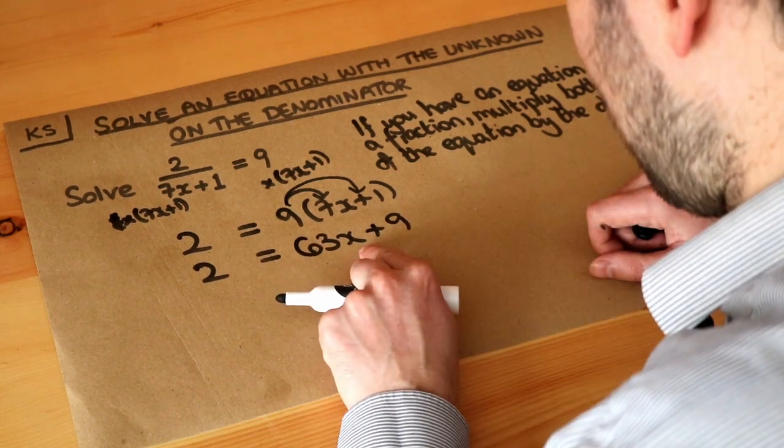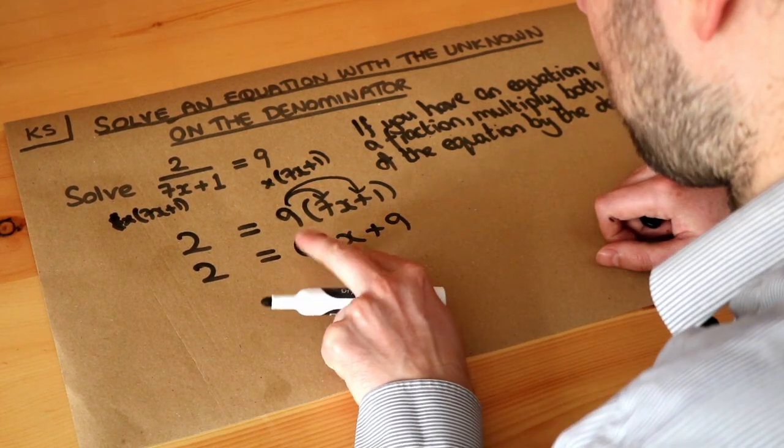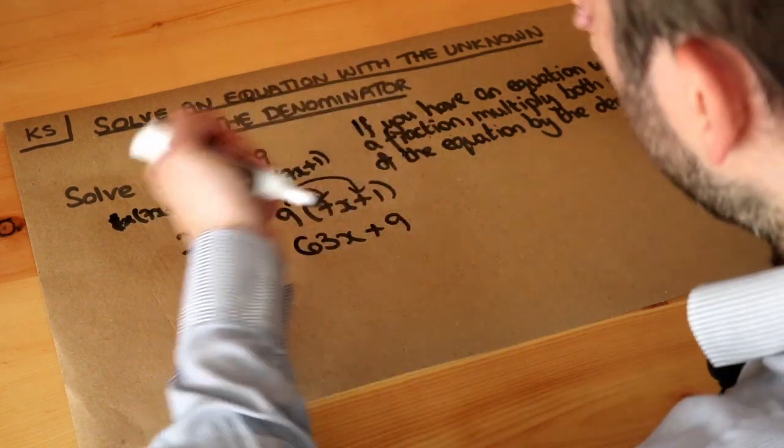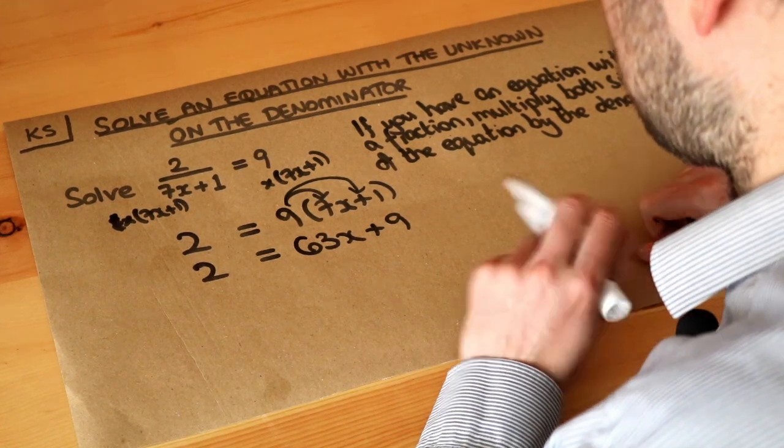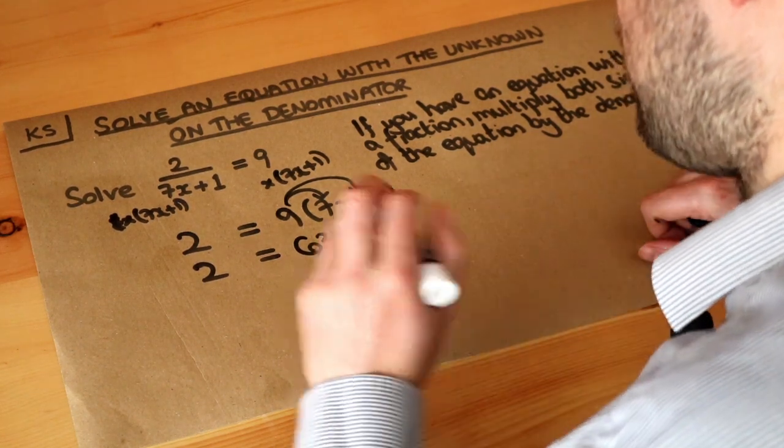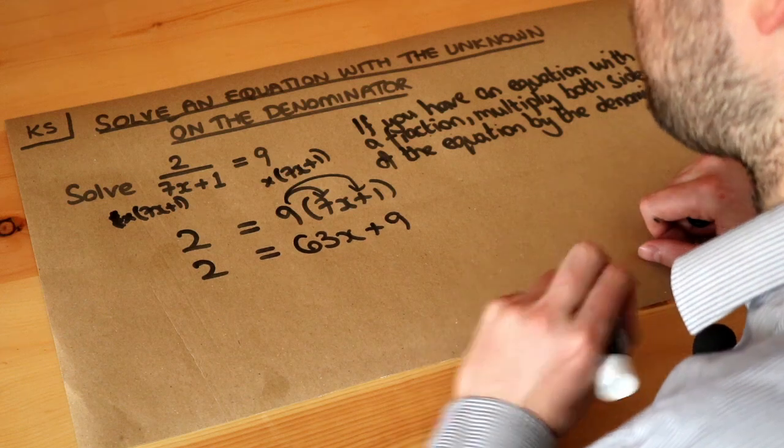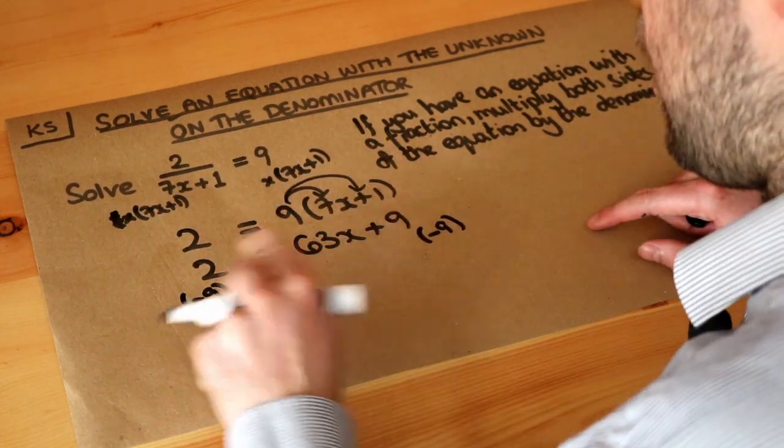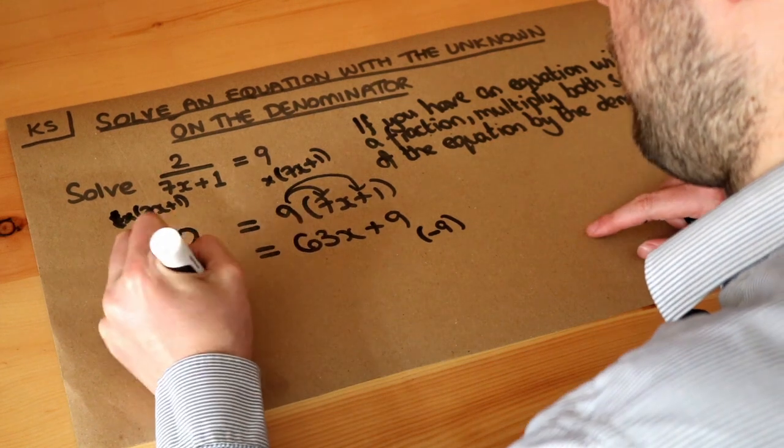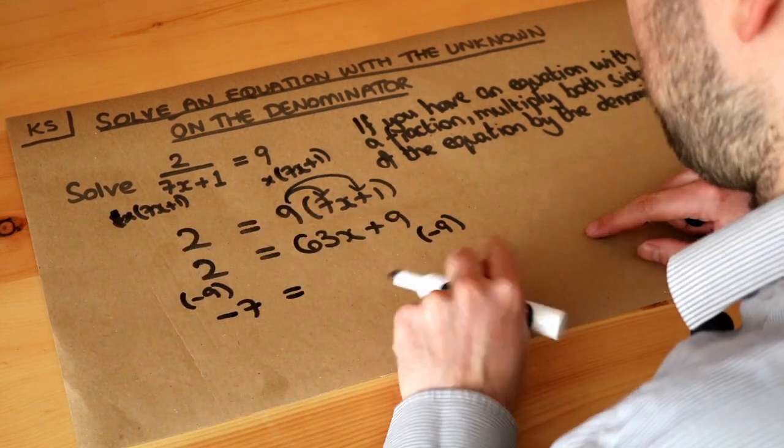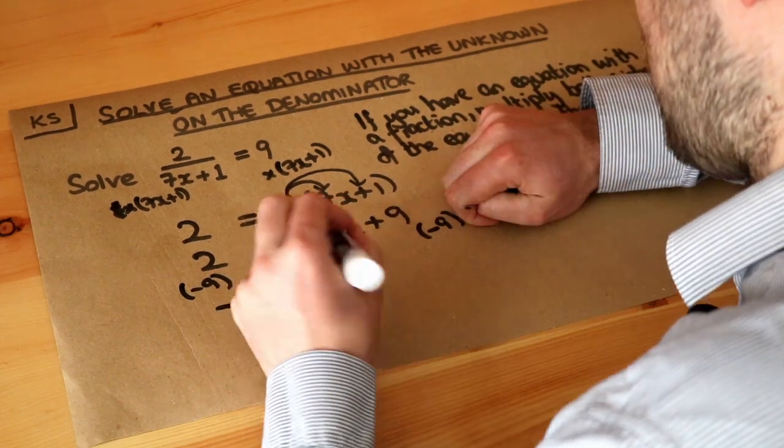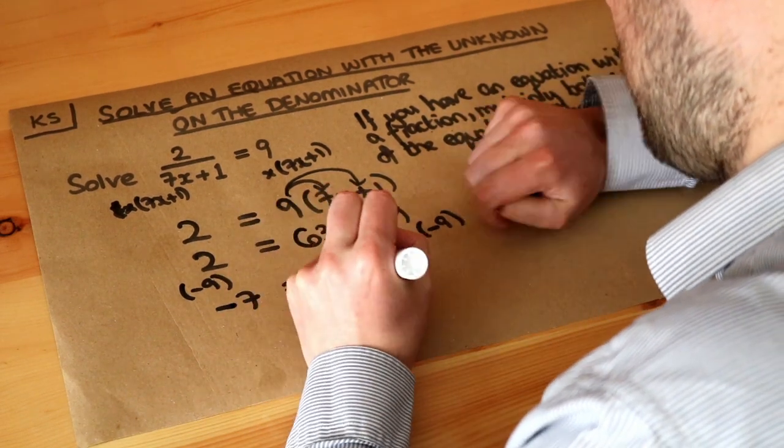Now remember, we're trying to get the x on its own. Now the x has been multiplied by 63, then we added 9 to it. We want to undo the last thing that was done to x. The last thing was adding 9, so therefore we do the opposite to undo it, which is subtracting 9 from both sides. So if we do that, 2 minus 9 is negative 7. And if we minus 9 from the right hand side, it gets rid of the plus 9. Cancels it out, and we're just left with 63x.